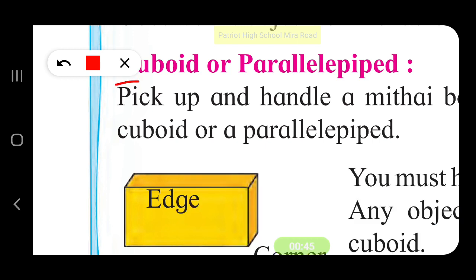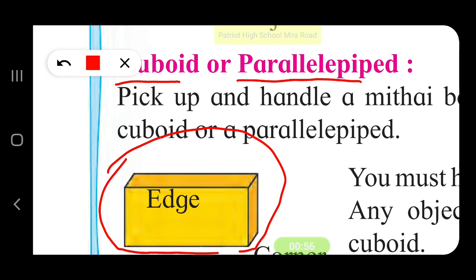A cuboid or a parallelepiped — both mean the same thing. Shapes like these are called cuboids or parallelepipeds. A cuboid has edges. This is the first edge, second edge, third edge, fourth edge, fifth edge, sixth edge, seventh edge — these are all edges.